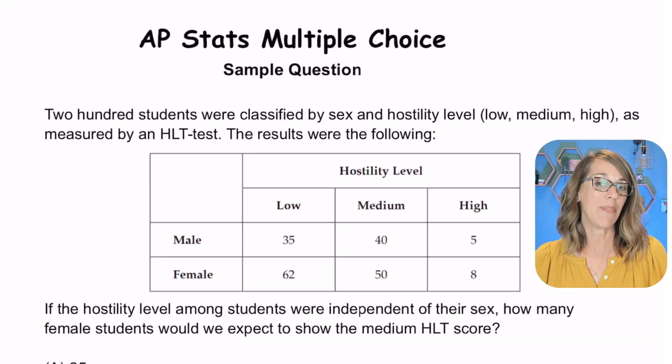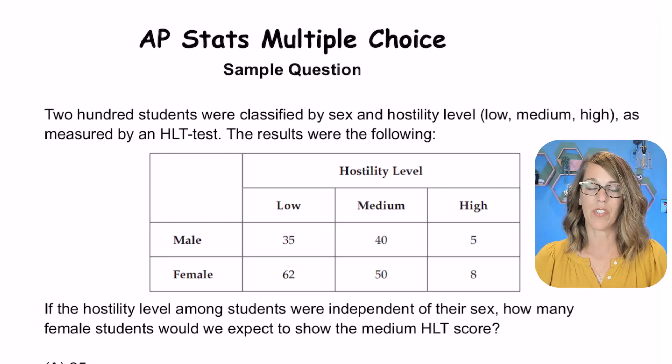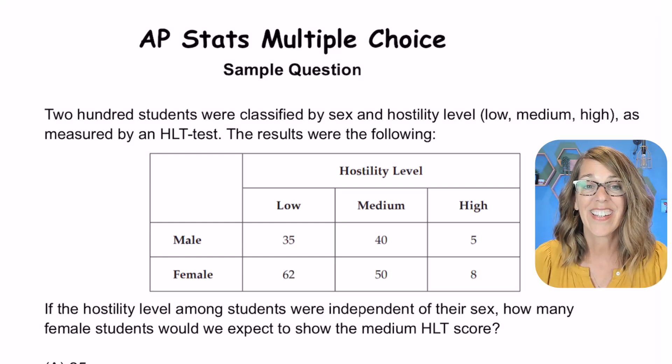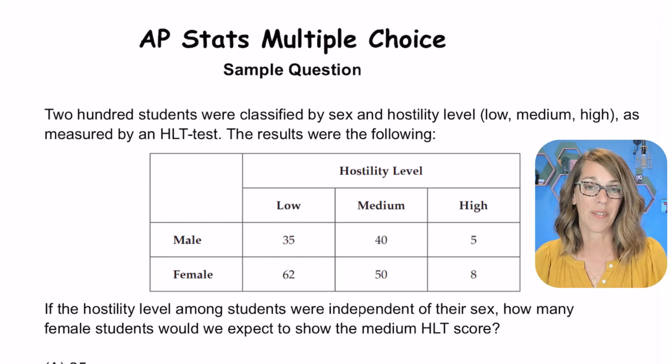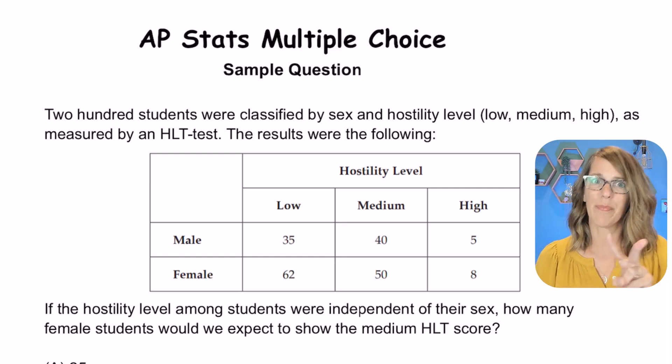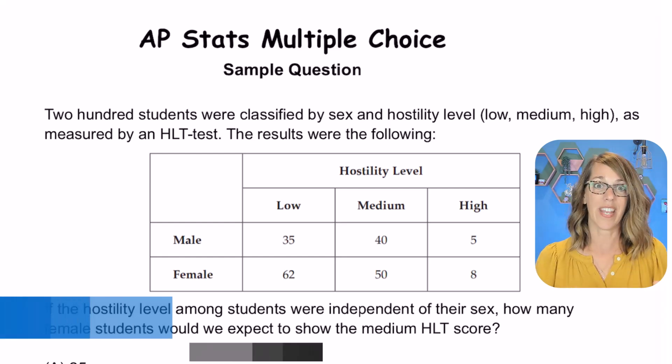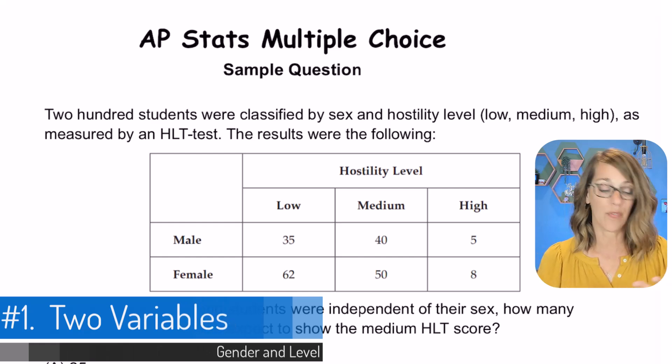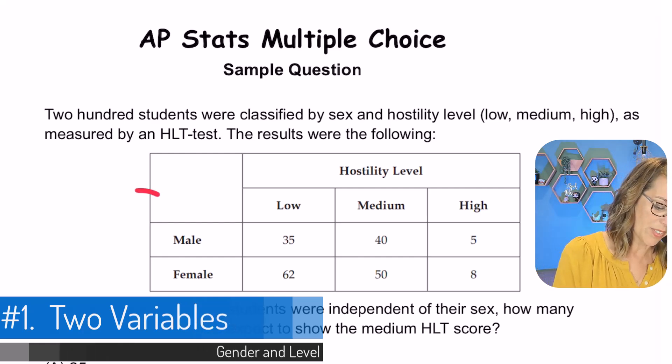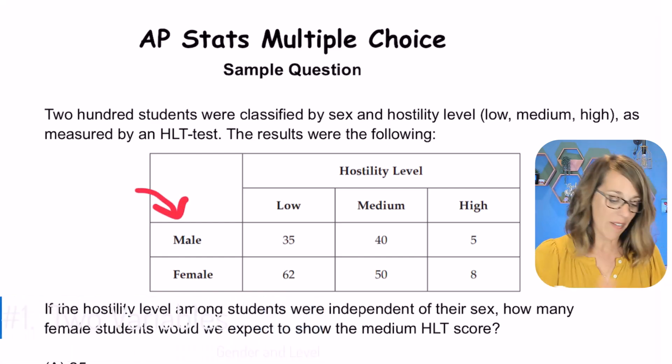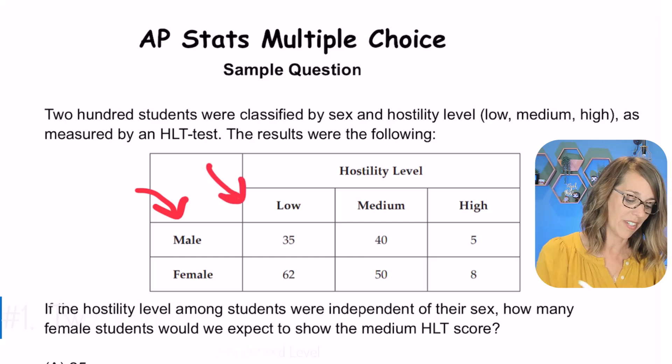We're going to tackle this AP stats question. The very first thing you want to do is recognize that it is in fact a chi-square test of independence. There are really two things I'm looking for to determine that. First, I notice this table gives me values for two variables: the variable of sex or gender, and the variable of hostility level.